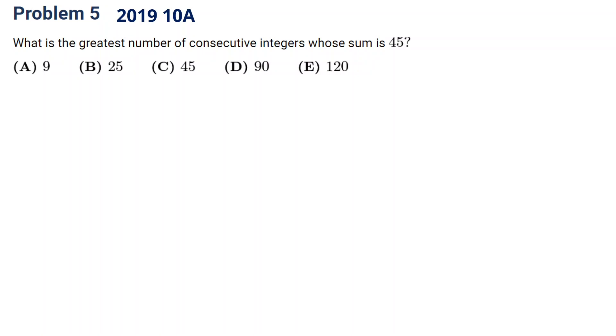Okay, let's come back. So here the question is, what's the greatest number of consecutive integers whose sum is 45? It's consecutive integers.